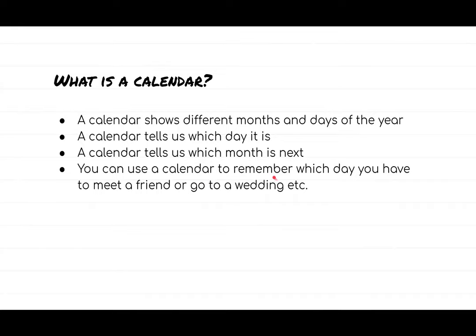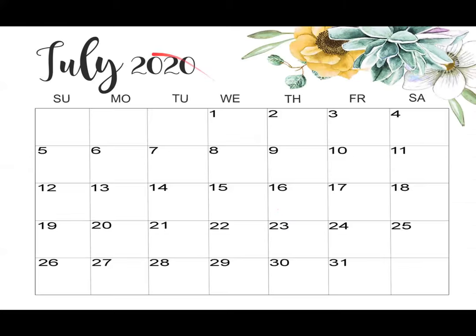So now we will look at a calendar. Here, I have put a picture of a calendar. This is a calendar of July 2020.